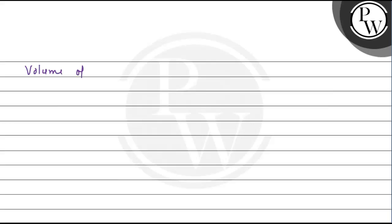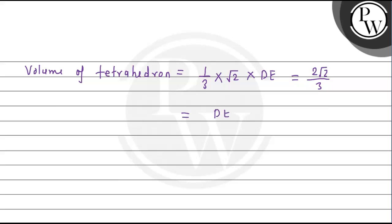The volume of the tetrahedron equals (1/3) × √2 × height = 2/3. Solving for height, h = √2. Therefore DE = √2.